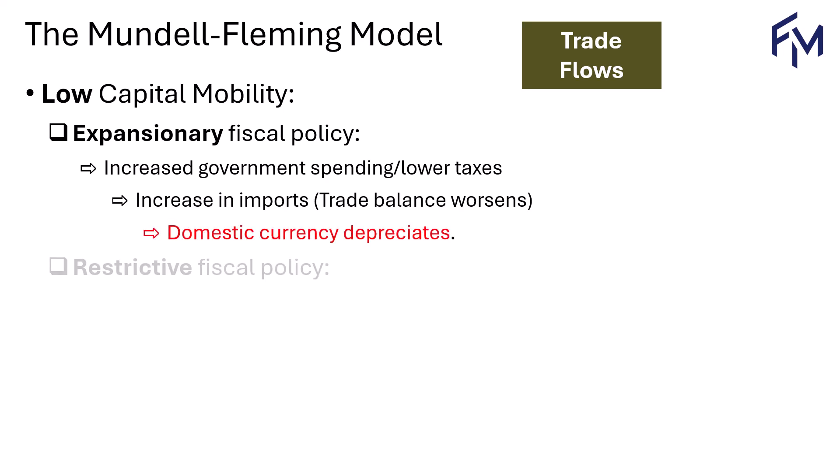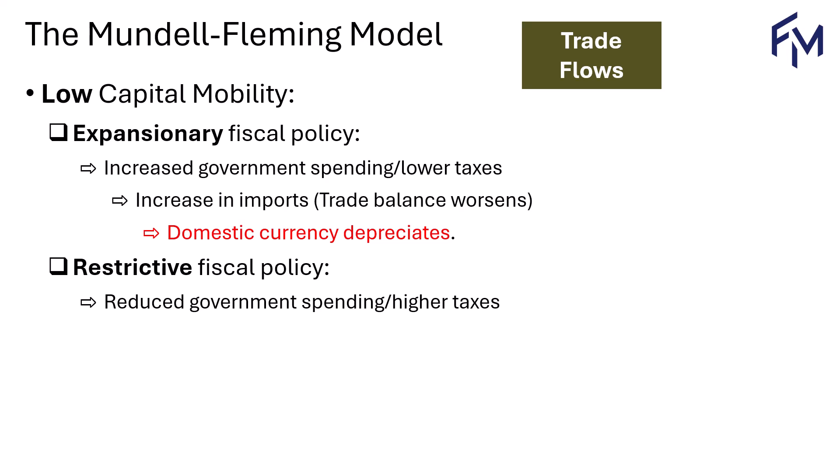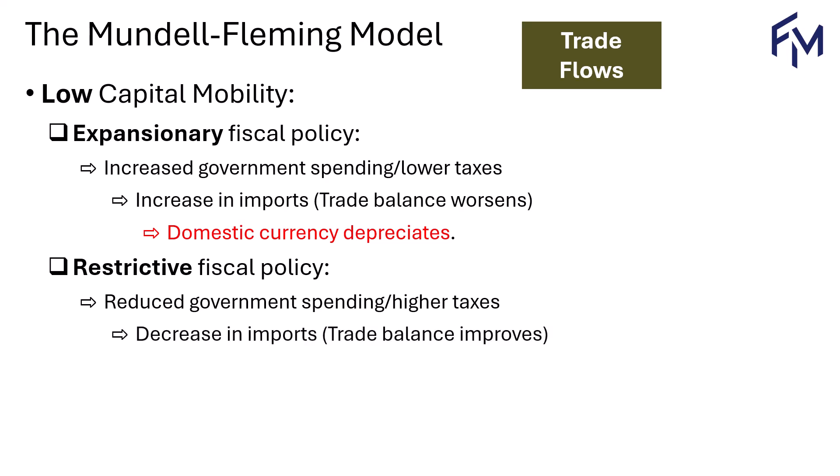With restrictive fiscal policy, where there's reduced government spending or higher taxes, demand falls. When demand falls, imports decrease, improving the trade balance, and this strengthens the domestic currency leading to appreciation.